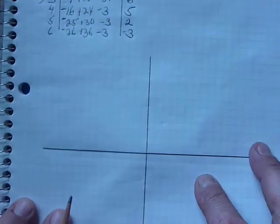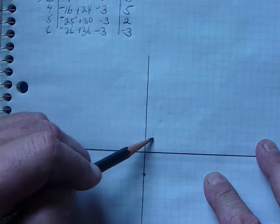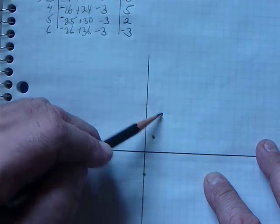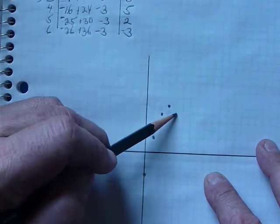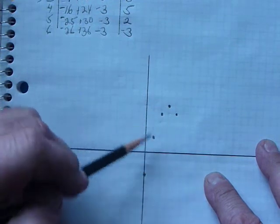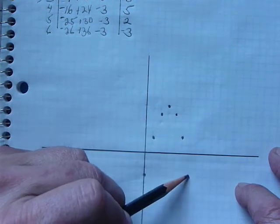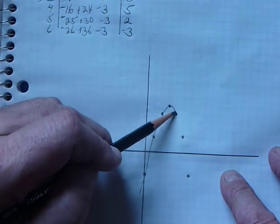So, now, I can graph this. I have 0, negative 3, 1, 2, 2, 5, 3, 6, 4, 5, 5, 2, and 6, negative 3. And, there's our parabola.